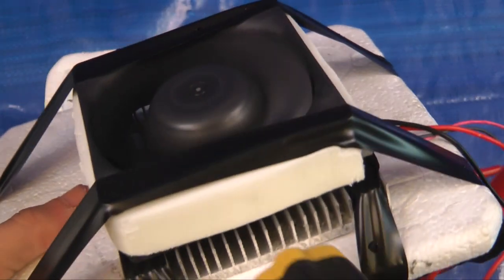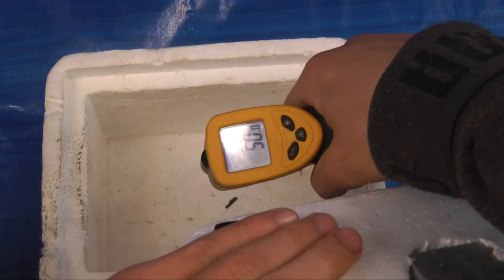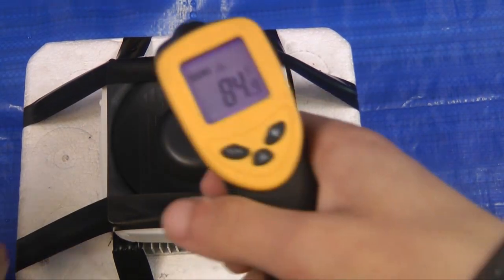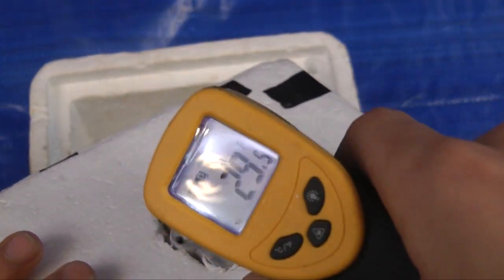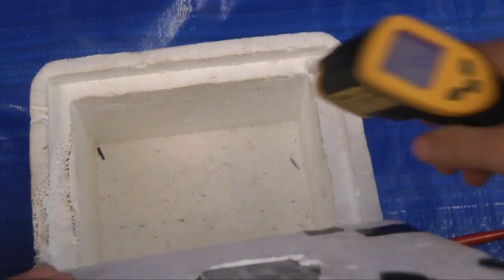About an hour in the heat sink is 86 degrees and the plate is 37. The water is 50 degrees. About 2 hours in the heat sink is 84 degrees. The plate is 27 degrees and the water is 45 degrees.